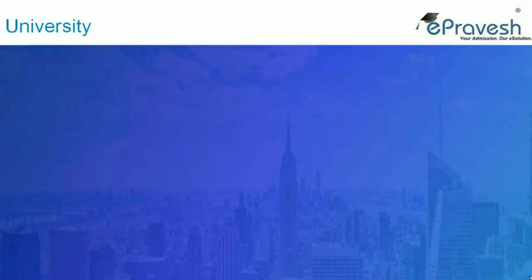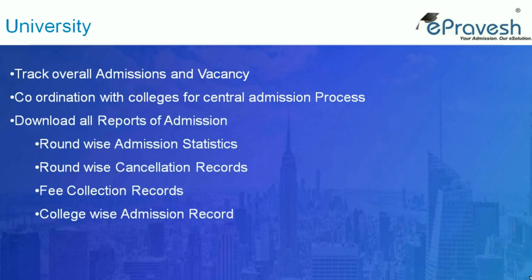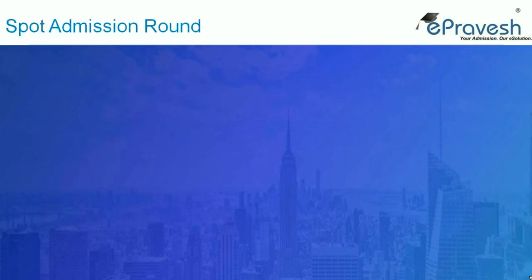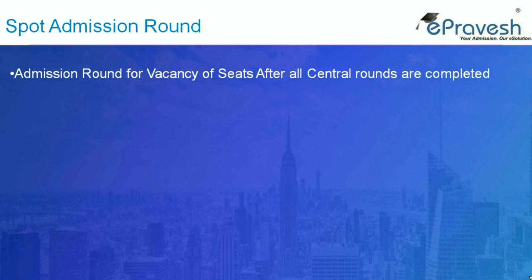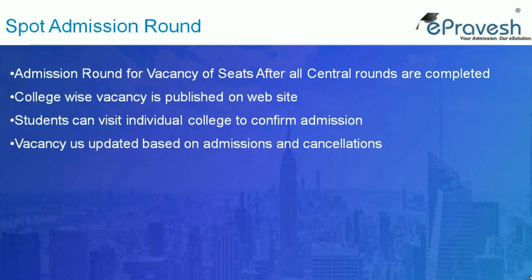Another crucial entity is the university. It is important for university representatives to have access to live admission statistics of the day-to-day process. University admin can log into the system to see the total number of allotted students and download various reports like round-wise admission statistics, round-wise cancellation records, fee collection records, and college-wise admission records. There can be additional spot round admissions for vacant seats after all central admission rounds are completed, where students visit individual colleges based on available vacant seats, and vacancies are updated based on confirmations and cancellations.